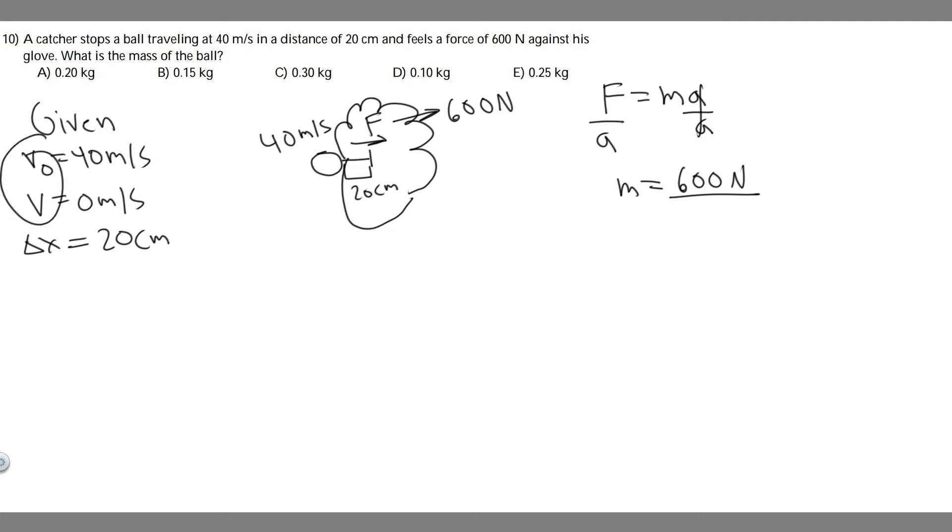So what you should notice is we have v, we have v sub 0, and we have delta x, meaning we can solve for the acceleration by using one of the kinematic equations. The equation we're going to use is v squared equals v sub 0 squared plus 2a times delta x.